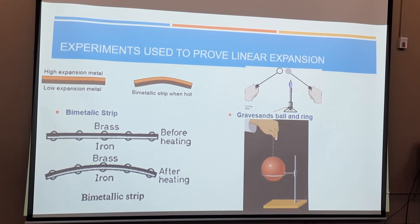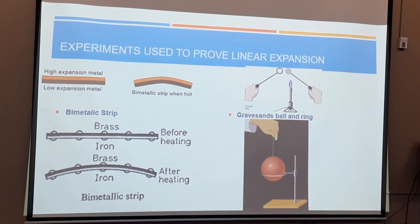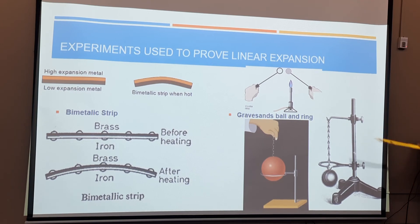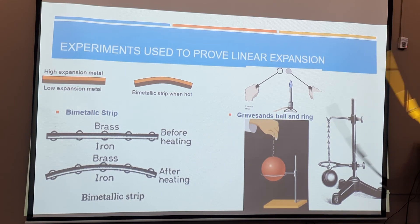For the Gravesend ball and ring experiment: under normal temperatures, a ball passes through a ring. If you heat the ball, it expands and won't fit through the ring — you must wait for it to cool before it passes through again. Alternatively, a ball that doesn't fit can pass through if you heat the ring, which expands and opens up. Videos of these experiments will be provided, or you can search 'Gravesend ball and ring' and 'bimetallic strip' on YouTube to find numerous demonstrations.